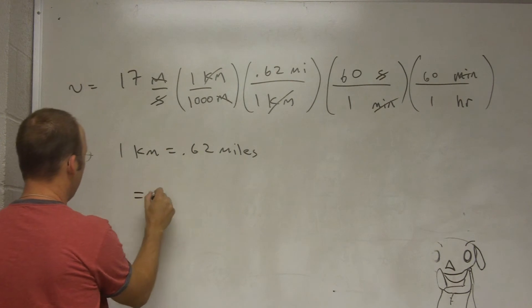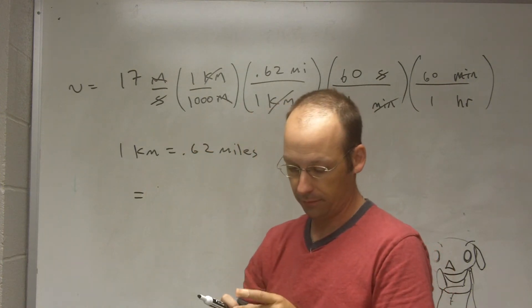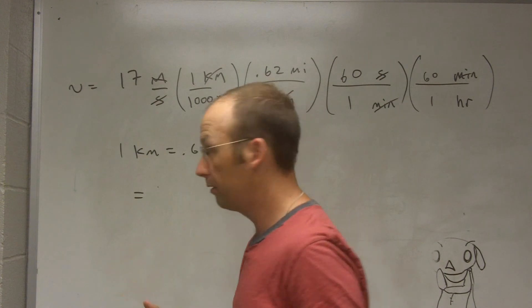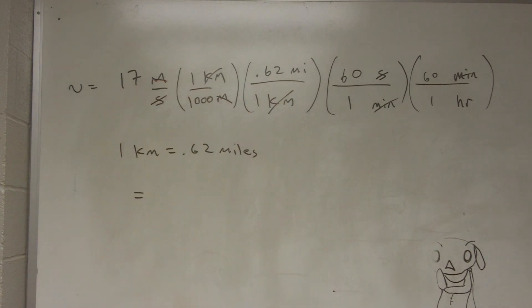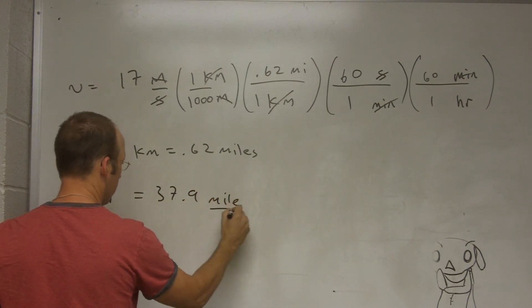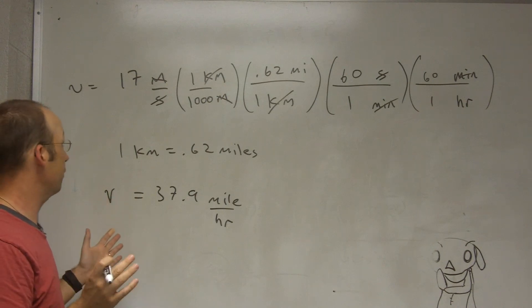So now I can just put all this in my calculator and I get... Okay, can you hear me still? Let's see. Okay, I assume you can still hear me. But if you can't, then just pay attention. Okay, so I just need to put all this in my calculator. And so 17 times 0.62 times 60 times 60 divided by 1,000. And I get 37.9. So V equals 37.9 miles per hour. Is that right? Yep. Okay, so that's it. That's the basics for unit conversion.